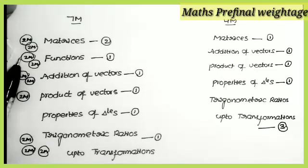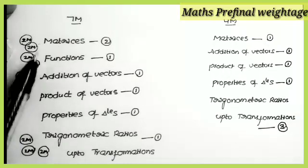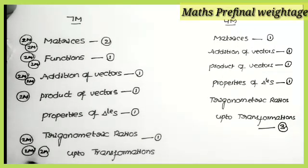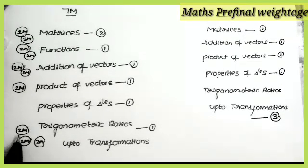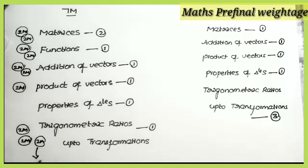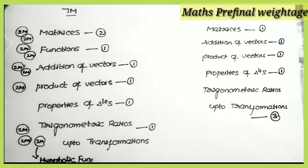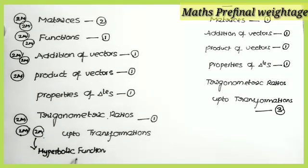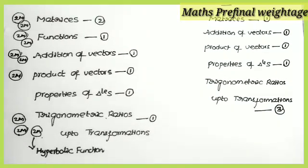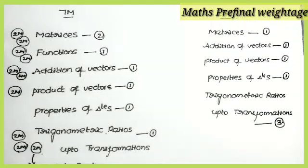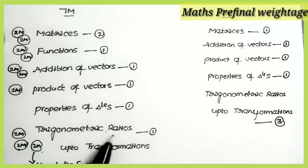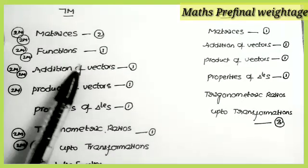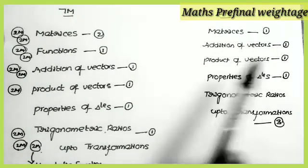Matrices: 2 sums. Functions: 2 sums. Additional Factors: 2 sums — total six questions from these three topics. Product of Vectors: 1 question. The last topic is Hyperbolic Functions — this is only a two-mark weightage topic. Total is ten questions for Maths 1A two-mark section. So this is the Maths 1A weightage. First prepare the seven-mark and four-mark questions from the important list, then prepare the two-mark questions.